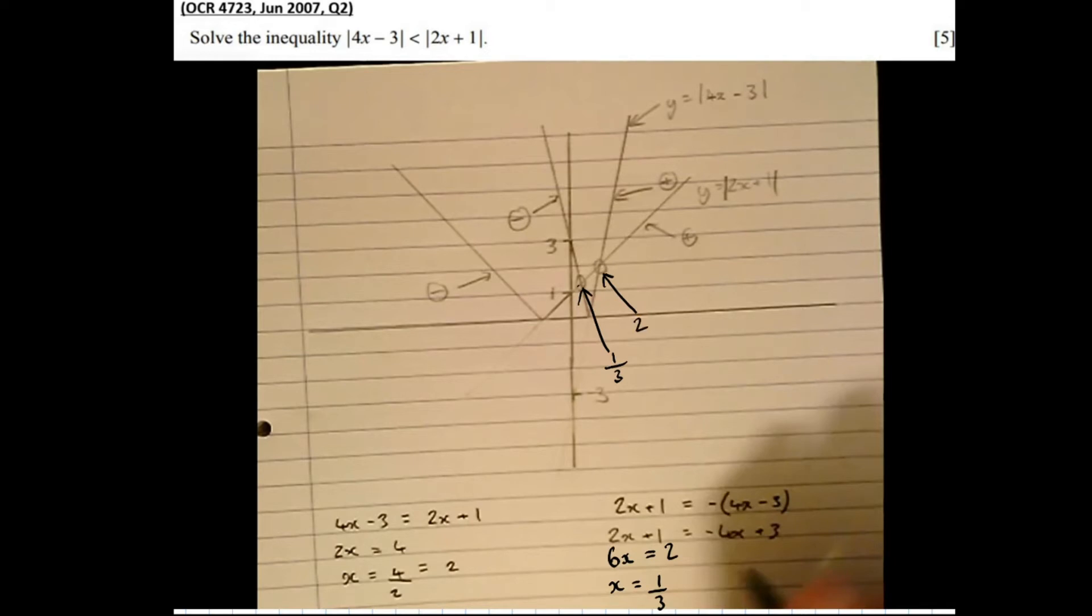Now the question's asked us where the graph of modulus of 4x minus 3 is less than modulus of 2x plus 1, where the graph is less than or underneath. We can see that this happens in this section here. This part of the graph is where modulus of 4x minus 3 is underneath modulus of 2x plus 1, between the values x equals a third and x equals 2.